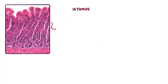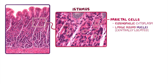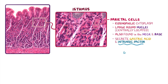The isthmus consists mostly of parietal cells, which can be identified in this high power image by their very eosinophilic, or pink, cytoplasm and their large round nuclei that are centrally located. Parietal cells can also be found in the neck and base of the glands, but overall more are present in the isthmus and neck. These cells are responsible for secreting gastric acid as well as intrinsic factor, a glycoprotein required for the uptake of vitamin B12 in the small intestine.